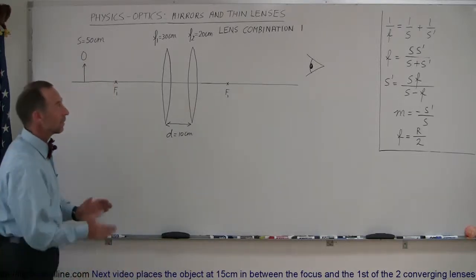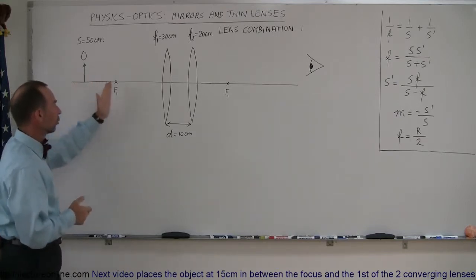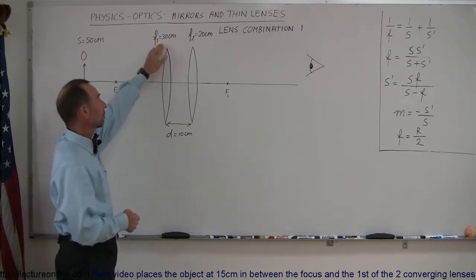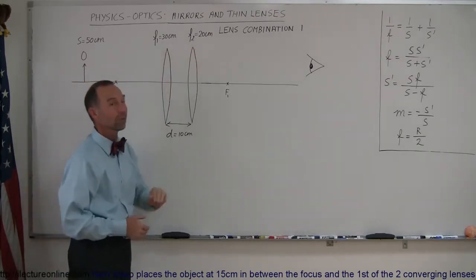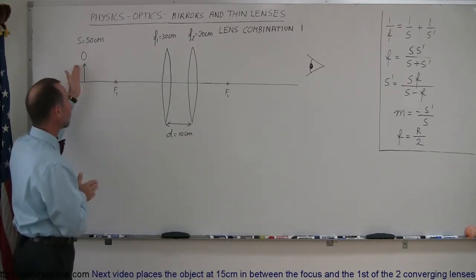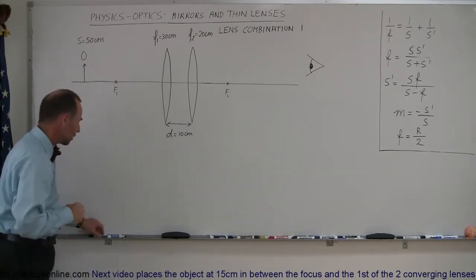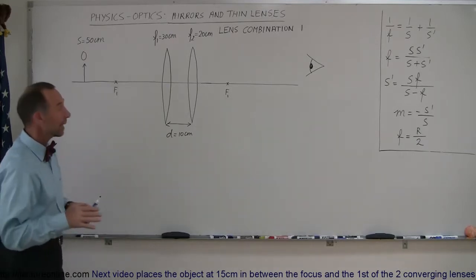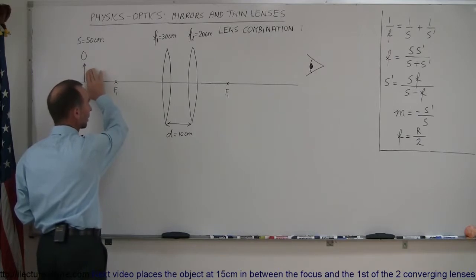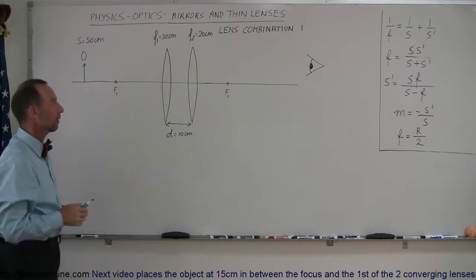Welcome to iLecture Online. Here is a combination lens problem where we are given an object and two lenses — in this case, two converging lenses: one with a focal length of 30 centimeters and the other with a focal length of 20 centimeters. We're supposed to find the final image cast by this object due to the two lenses. The way you typically want to do that is: first, draw the ray diagram for the image formed from the object using only the first lens and ignoring the presence of the second lens entirely.